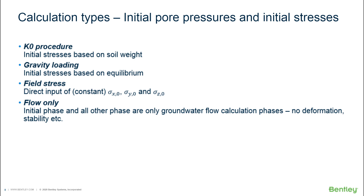The third option is field stress. In field stress, we directly input values of horizontal stress and vertical stress — horizontal stress has two components, sigma x and sigma z, and sigma y for the vertical stress, and it is inputted directly. This can be used, for instance, if you want to model a tunnel in very deep rock where you don't want to model all the rock up to the surface including the whole mountain. You just put direct input of the stresses for a confined piece of rock using the field stress option.